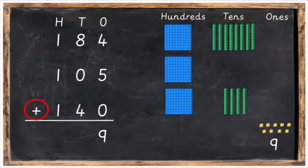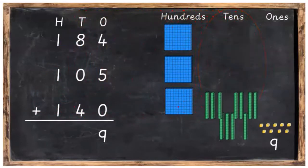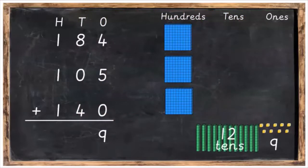After that, we're going to go to our tens. So we're going to add the eight plus zero plus four. Eight plus zero plus four is equal to 12. Now we've got 12 tens, but what are 12 tens? Let's count up in tens.